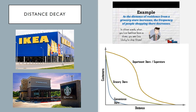Another way we think spatially is through distance decay. Distance decay is just the interaction between two places as the distance increases. For example — Ikea: I'm not willing to drive 90 minutes to Denver to get a cup of coffee, but I might drive to Denver a couple of times to get new bedroom furniture. There's more interaction between places when the distance is shorter, and less interaction as the distance gets longer.